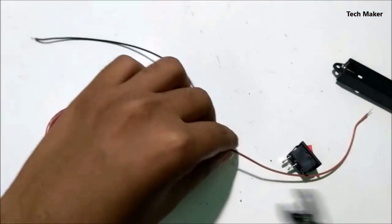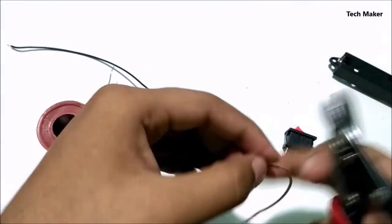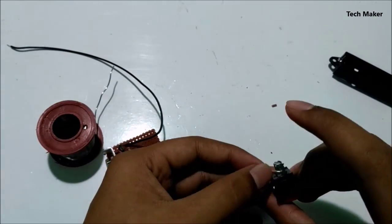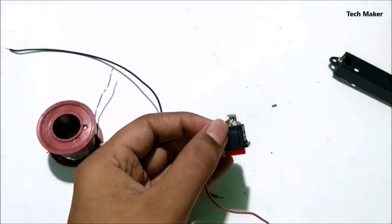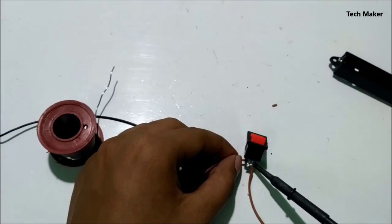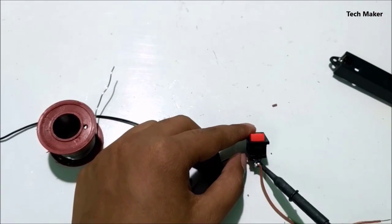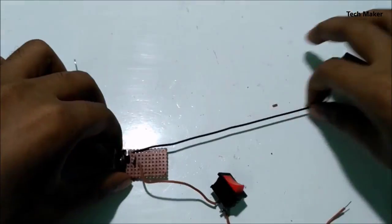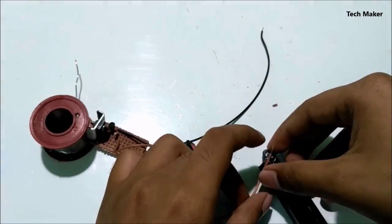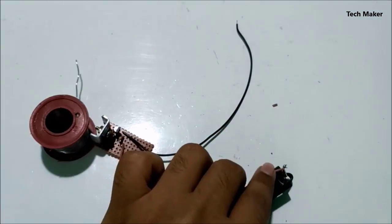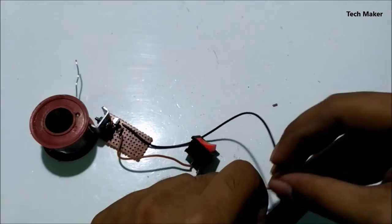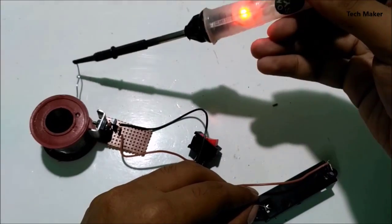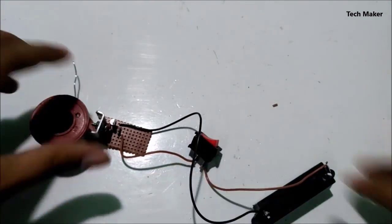Now cut the positive wire and add a switch to it. This goes to the battery case. This goes to the negative of the battery case.